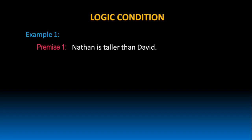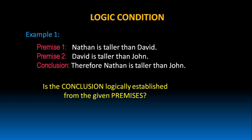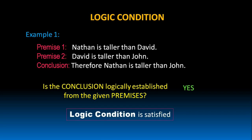Nathan is taller than David. David is taller than John. Therefore, Nathan is taller than John. In this example, is the conclusion logically established from the given premises? Yes, of course. Because Nathan is taller than David and David is taller than John, we can conclude Nathan is taller than John. That's why we say logic condition in this argument is satisfied.